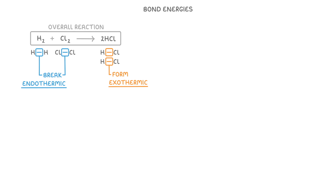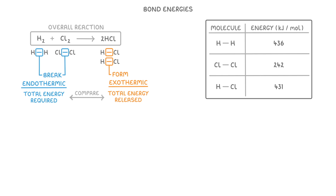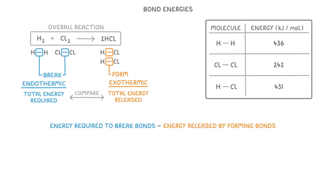To determine if the overall reaction is exothermic or endothermic, we'd have to compare the total amount of energy required to break these bonds to the total amount of energy released when these bonds form. In an exam, you'll normally be given a list or a table with all of the bond energy values that you'll need. And to work out the overall energy change, we just do the energy required to break bonds minus the energy released by forming bonds.